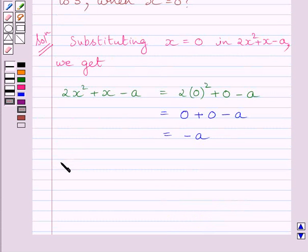So we get the value of 2x² + x - A equals -A when x = 0.